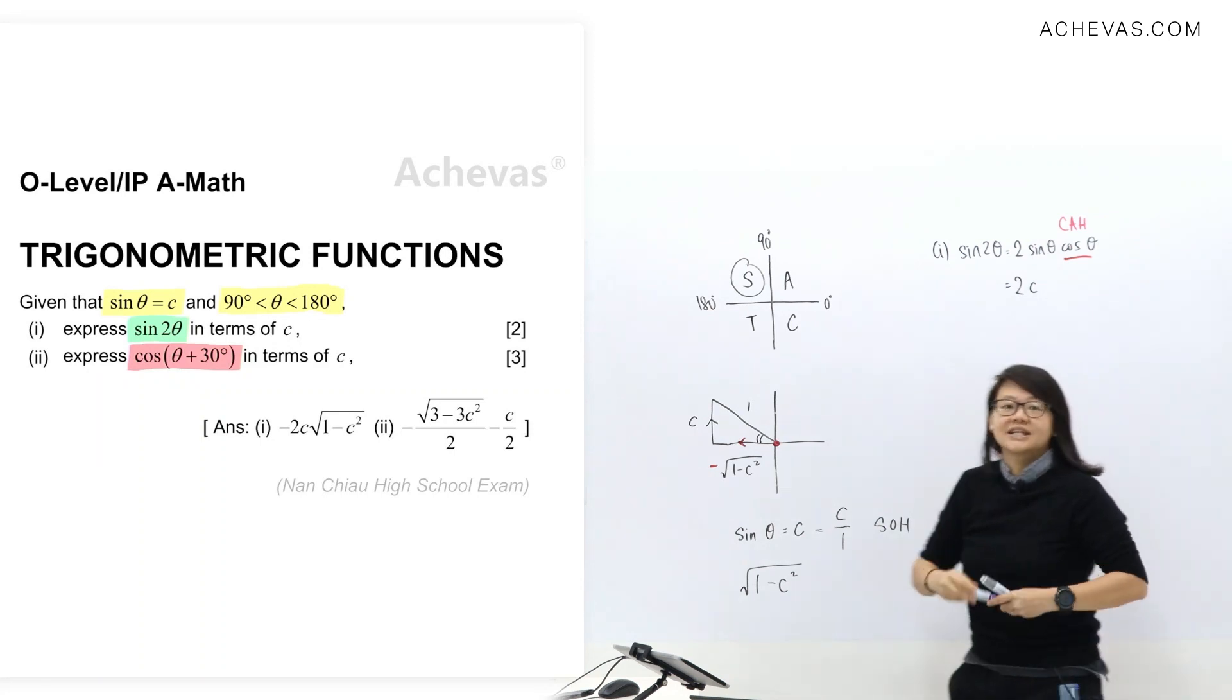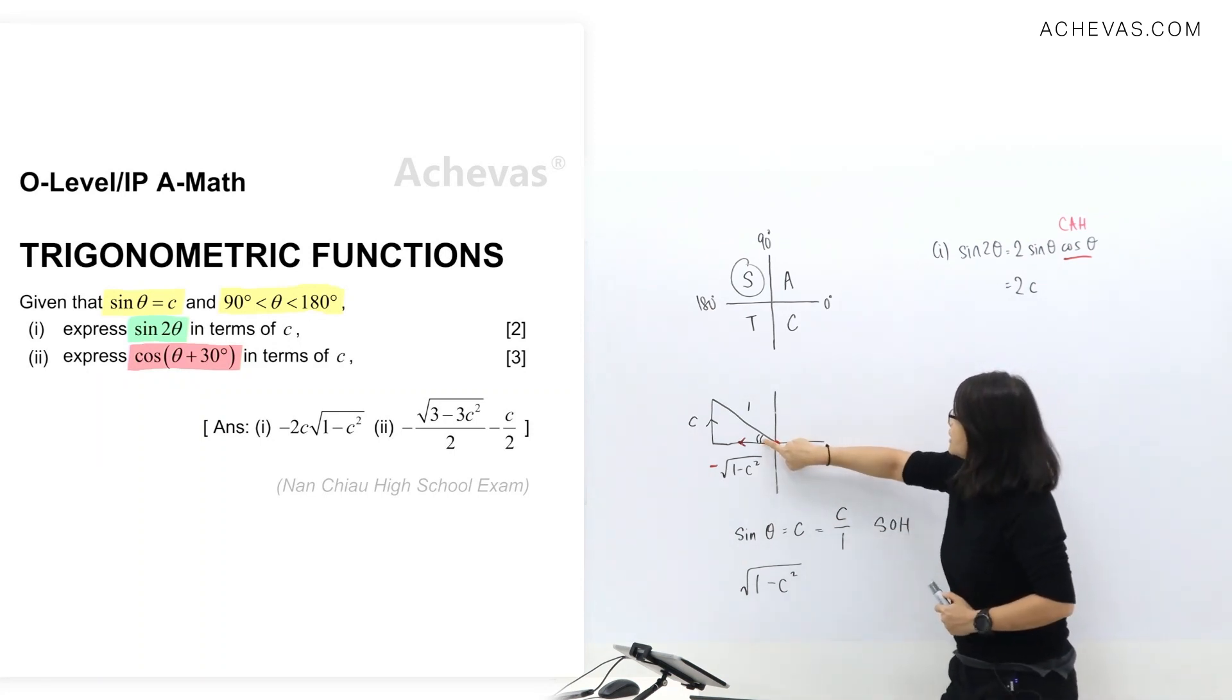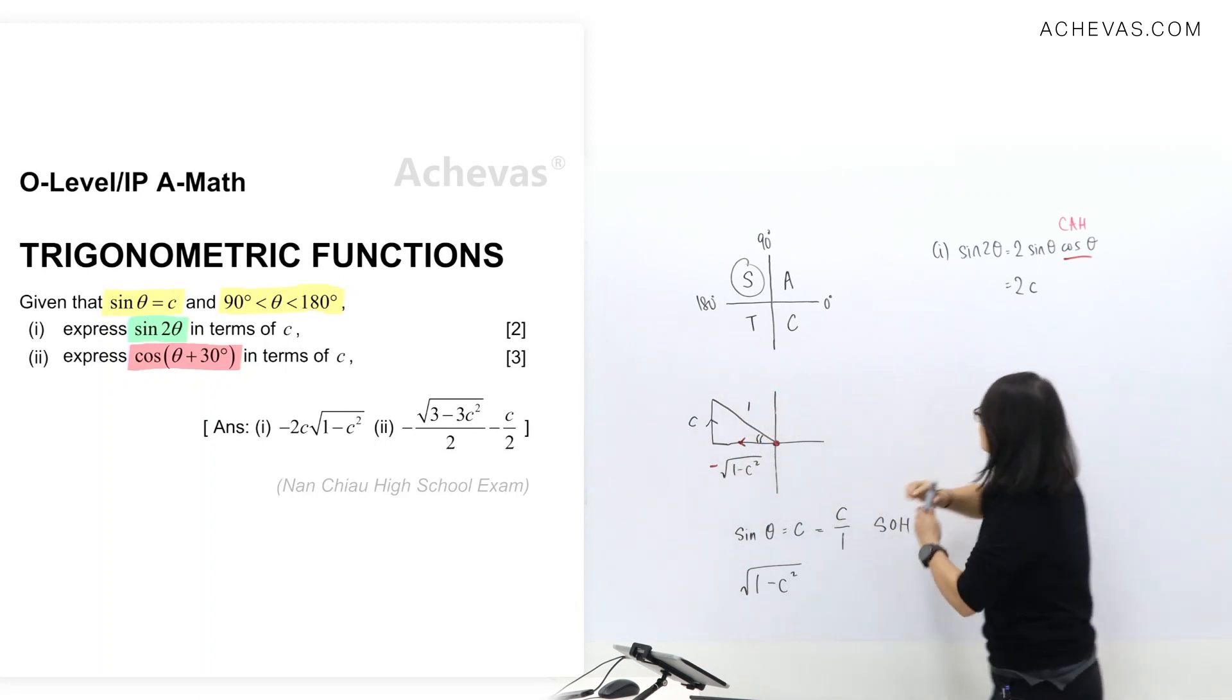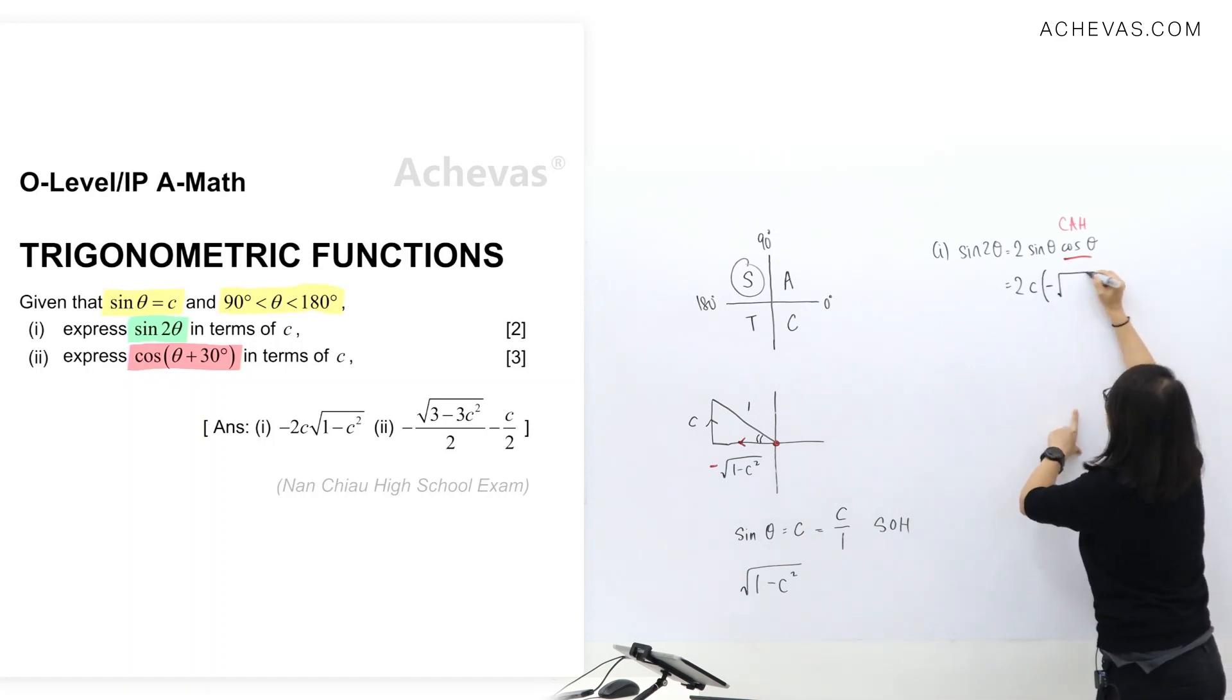So this cos theta here, we're going to apply CAH. I'm going to look at adjacent and hypotenuse from the diagram. So for this angle here, adjacent is this one, hypotenuse is this one. So I'm going to take this, divide it by 1. So I'm not going to write 1 as well. So this one here, I'm just going to write negative square root 1 minus c square.